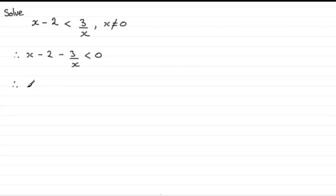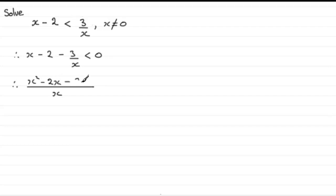Now we put it over a common denominator, which in this case is x. Multiplying through by x gives us x squared minus 2x minus 3, and that's less than zero. I didn't multiply both sides by x — remember, we don't know the sign of x; it could be negative or positive. I'm just putting everything over the one common denominator.